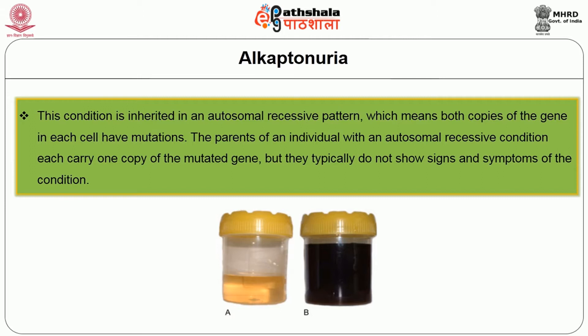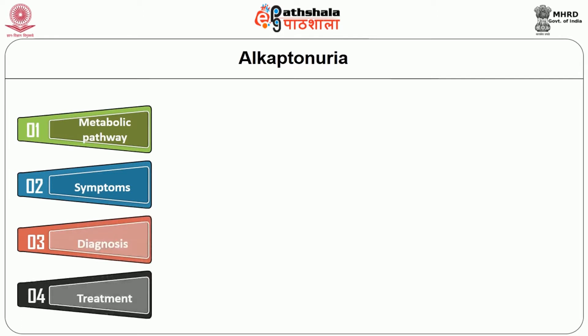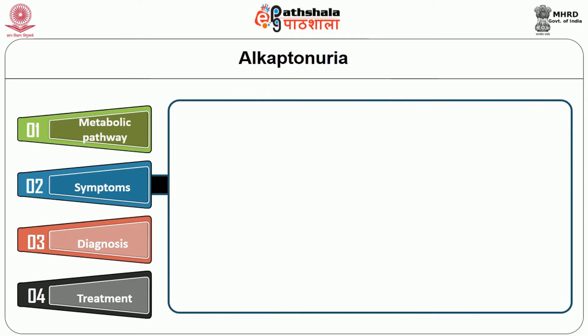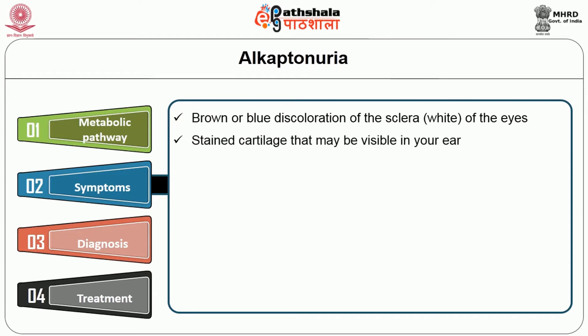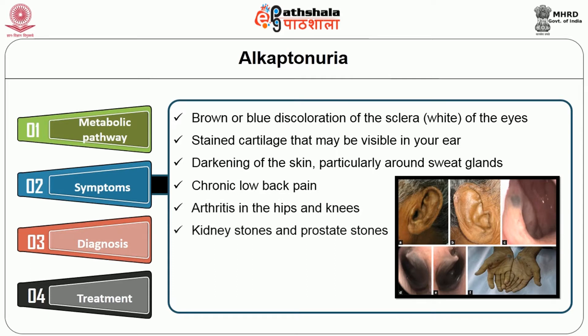The parents of an individual with an autosomal recessive condition each carry one copy of the mutated gene, but typically do not show signs and symptoms of the condition. This is the metabolic pathway of how phenylalanine is converted into the final product. Symptoms include brown or blue discoloration of the sclera of the eyes, stained cartilage visible in the ear, darkening of the skin particularly around sweat glands, chronic low back pain, arthritis in the hips and knees, and kidney stones and prostate stones.